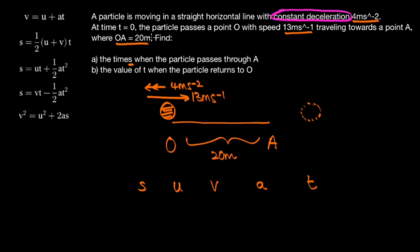So typically in a SUVAT question, they're going to give you three of the letters of SUVAT. We're told that the deceleration is 4 meters per second squared, so we can write minus 4 under A. Our initial speed is 13 meters per second, so we can write 13 below U. And our displacement is 20 meters.